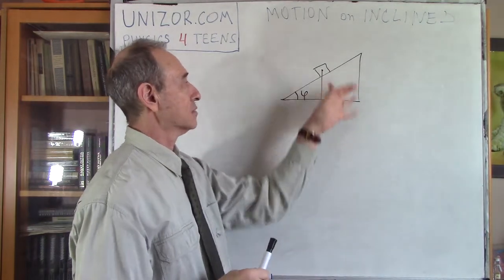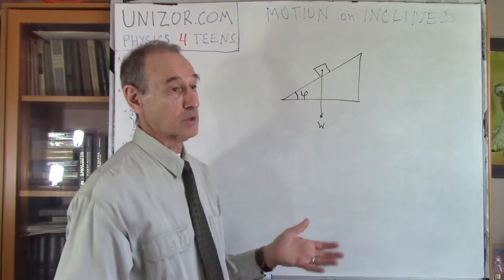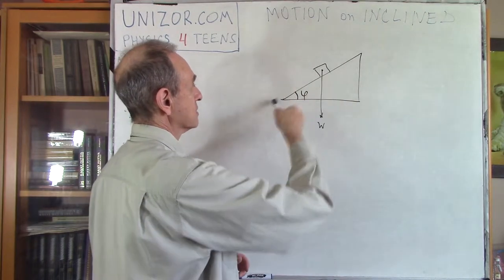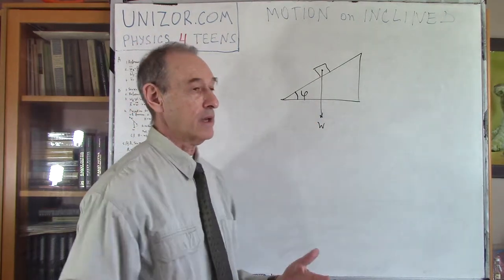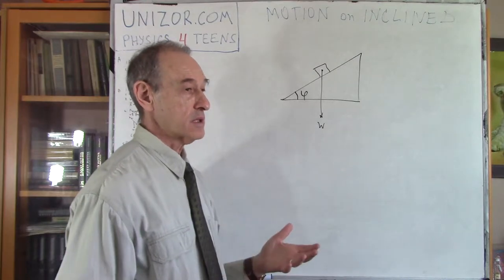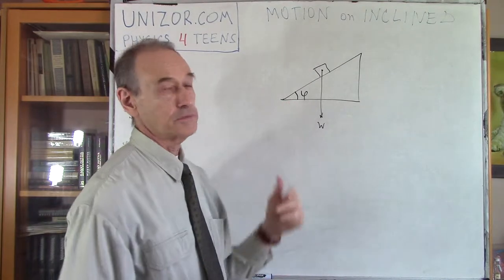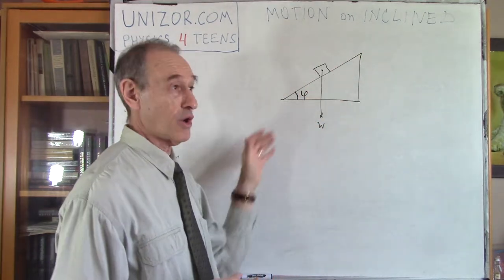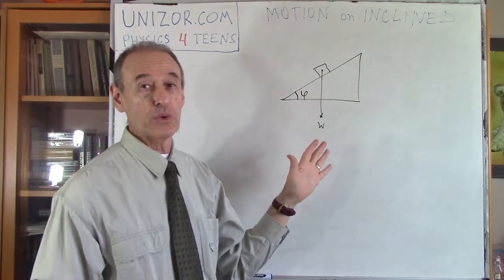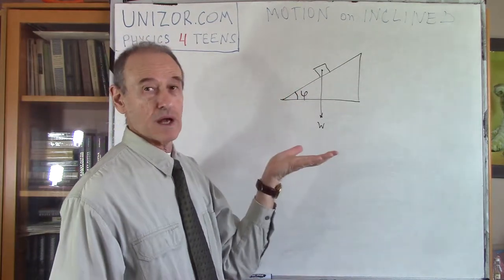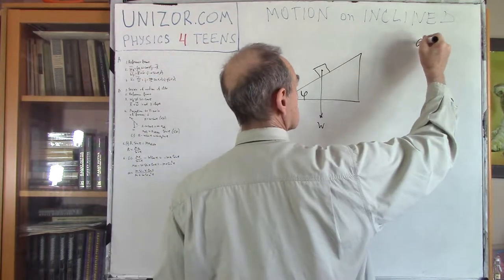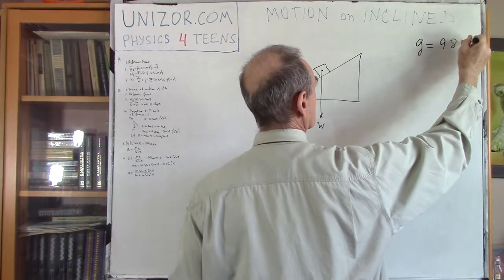Sometimes I use the word inclined plane, sometimes I use the word slide, because it really looks like a slide on a children's playground. This object is sliding under its own weight. My task is to determine how fast it will go down. Obviously, if the angle phi is greater, it's steeper, it should go faster. If angle phi is 90 degrees, the object should fall with acceleration of free fall, G, approximately 9.8 meters per second squared.